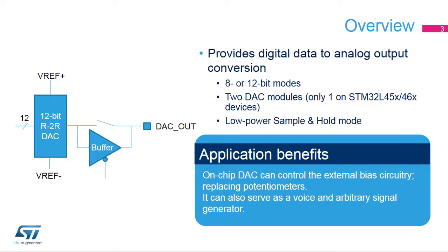The digital-to-analog converter on STM32L products ensures the conversion of 8- or 12-bit digital data to the analog voltage. Two DAC modules are embedded in the STM32L4 devices, except on STM32L45X/46X devices, where only one DAC is implemented. A low-power sample and hold mode is also integrated.